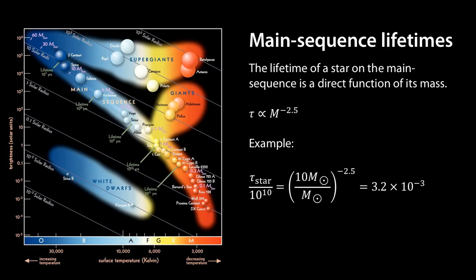If we complete that equation, we get 3.2 times 10 to the minus 3, so we multiply that by the lifetime of our sun, 10 to the 10, and it equals 10 to the 7 years.